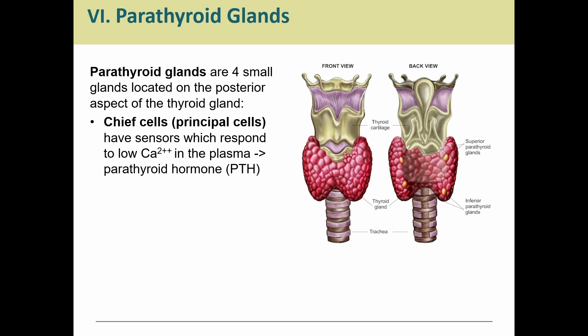So where are these parathyroid glands? Remember, 'para' means next to or near, so the parathyroid glands, as the name implies, are near or next to the thyroid. In this case, they are literally hanging out right on the back side of the thyroid.